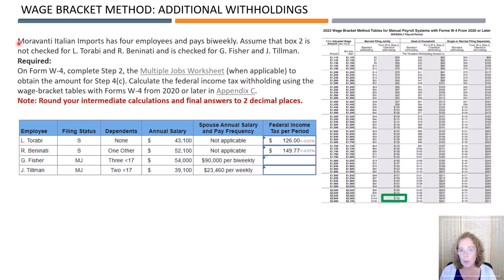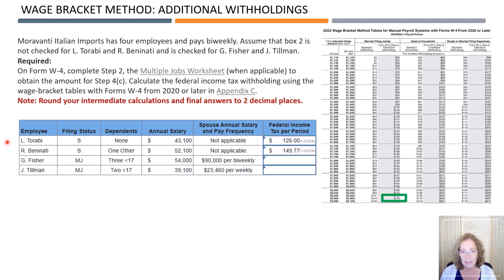Here's another example that illustrates what we have to do when employees have dependents as well as additional withholdings from a spouse's income. Maravanti Italian Imports has four employees and pays bi-weekly. Assume that box 2 is not checked for L. Torabi and R. Beninati, and is checked for G. Fisher and Jay Tillman. The first two employees, Torabi and Beninati, are very similar to the prior examples, so I won't go over the detailed calculations. Now let's look at Fisher. Fisher is married filing jointly and has three dependents under 17. The annual salary is $54,000 and the spouse's salary is $90,000.